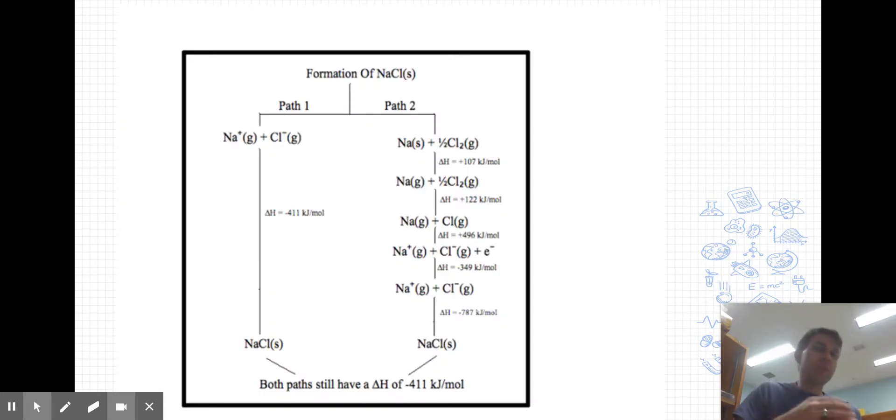A good example where this applies would be a reaction like forming solid sodium chloride. Now, the direct path, which just involves one step, is to combine sodium ions and chloride ions, but to do that, you have to have them in the gas state. You need some specialized equipment to do that.